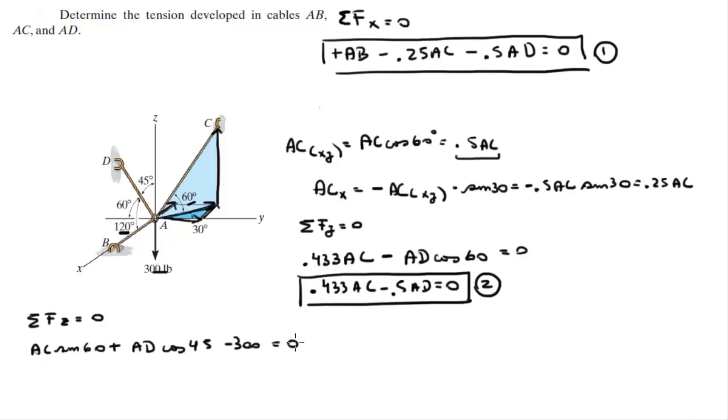And that is equal to 0. So this is 0.866 AC plus 0.707 AD is equal to 300. And I'm calling this equation 3.